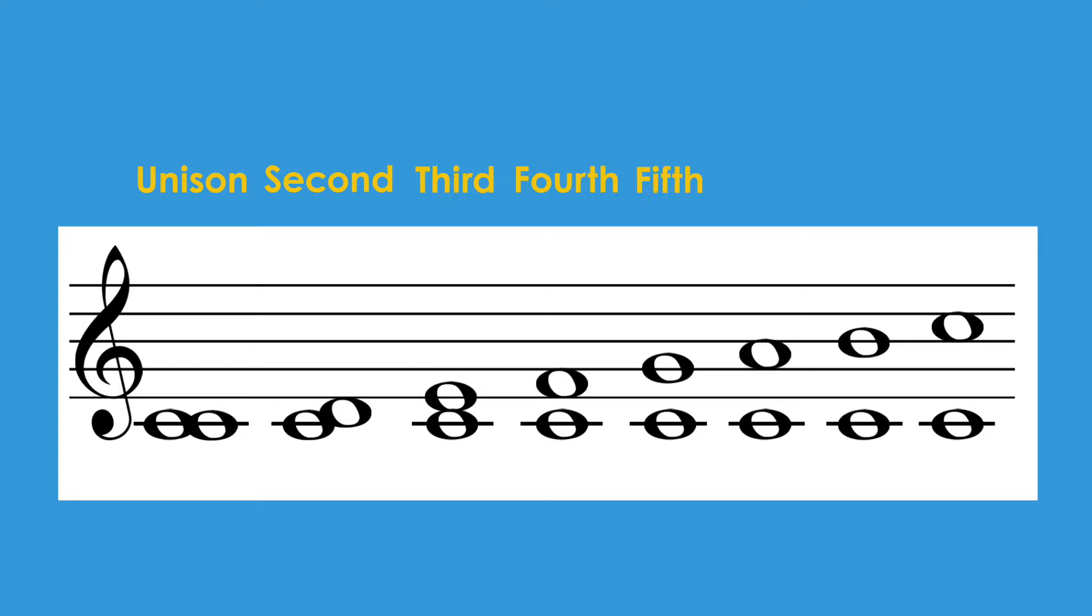We can repeat this process all the way up through the seventh scale degree where the distance between C and B is 1, 2, 3, 4, 5, 6, 7. So we would call this distance a seventh.